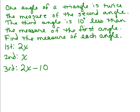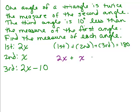Now what do we know about the three angles of a triangle? They add up to 180. So basically we know that the first plus the second plus the third is 180. We write down what the first angle is, 2x, plus what's the second angle, x, plus what's the third angle, 2x minus 10. And what does that add up to? 180.